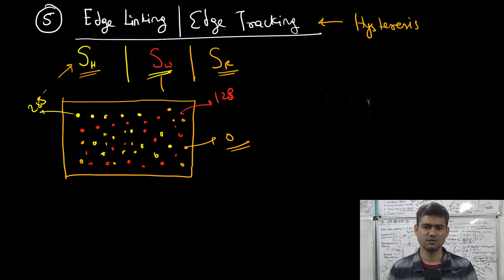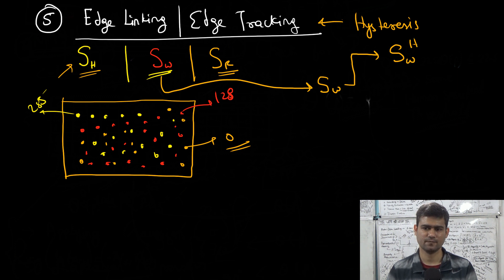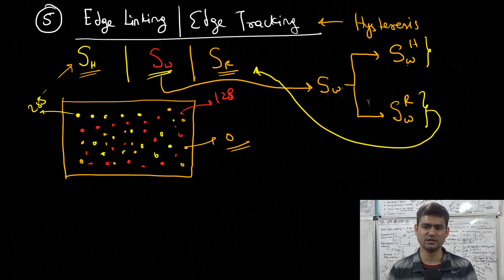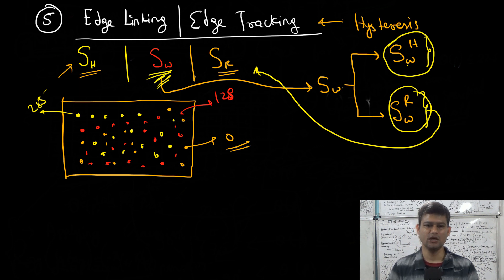In the final step, the task is to divide the set SW into two parts: SWH and SWR. The set SWH contains all points transferred from SW to SH, and the set SWR contains all points transferred from SW to SR — meaning these are the points finally rejected and the points finally accepted as edge points from SW.